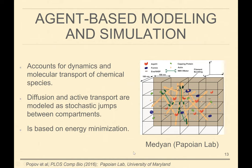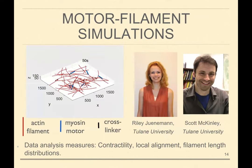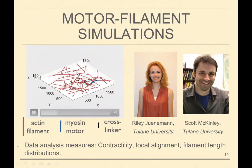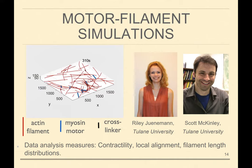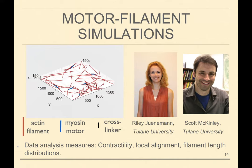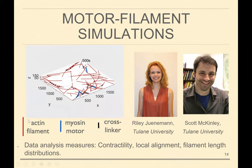Importantly, we have information from this synthetic data about locations of these cylinders throughout an actin filament. The chemical and mechanical models are coupled, and deciding what happens at the next time point is based on energy minimization. I've worked with Scott McKinley at Tulane and his undergraduate student Riley to set it up for our problem — determining domain size, the interesting proteins to look at, and developing data analysis measures like contractility of the emerging cytoskeleton network, local alignment, filament length distributions, and motor localization.